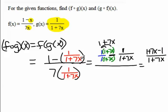In the denominator, I have 7 times 1/(1+7x). With multiplying fractions, I multiply the numerators, multiply the denominators, and I end up with 7/(1+7x). That's in the denominator.